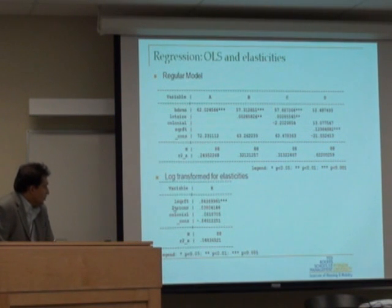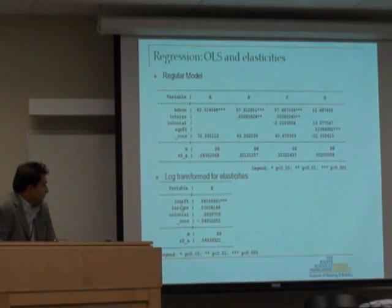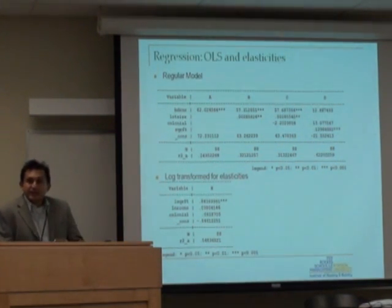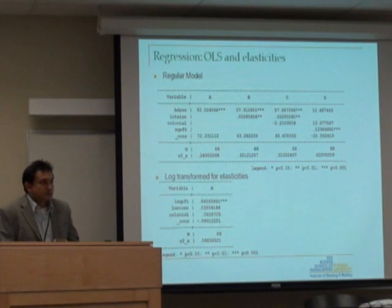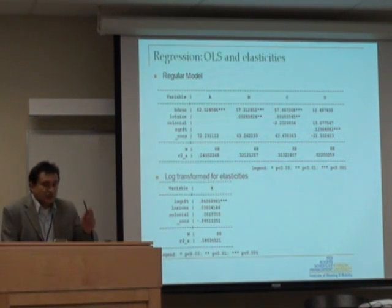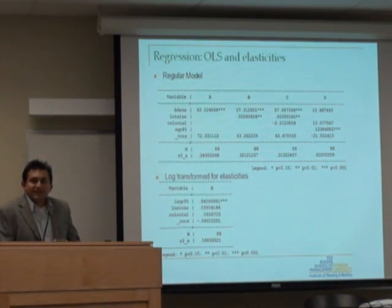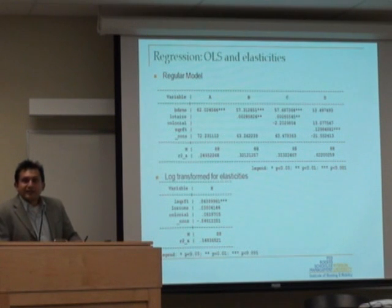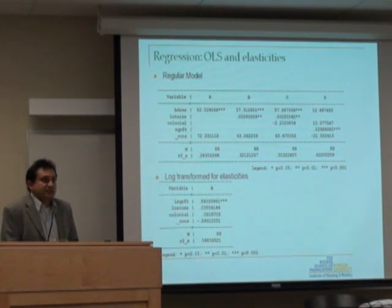So if I regress the log of price as a function of log of square footage, I get 0.84. What does it mean? For a percentage increase in the square footage of the house, the price of the property increases by 0.84%. This is coming out of the model directly as an elasticity measure.